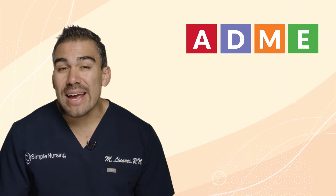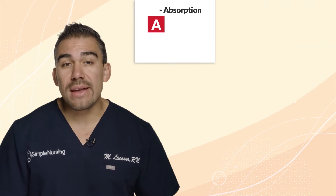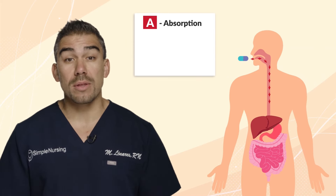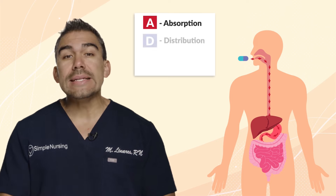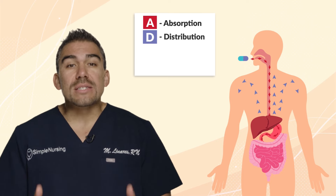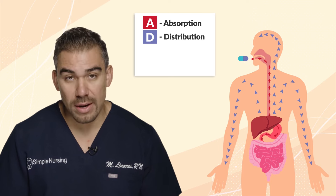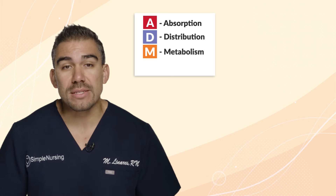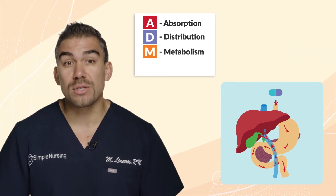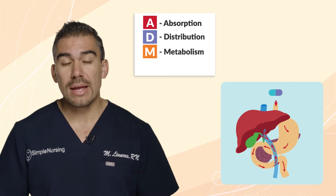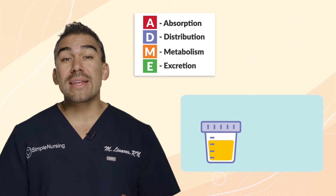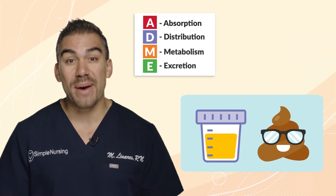ADME stands for A — absorption, how medications are absorbed in the body. D is for distribution, how medications get to where they're going in the body. M is for metabolism, basically how the medication is processed within the body. And E is for elimination, how the medication gets out of the body.